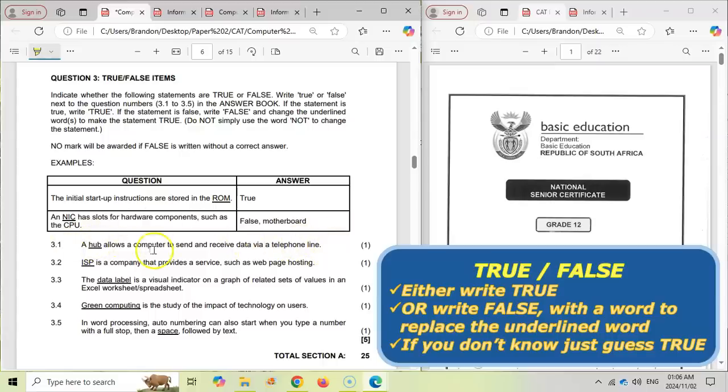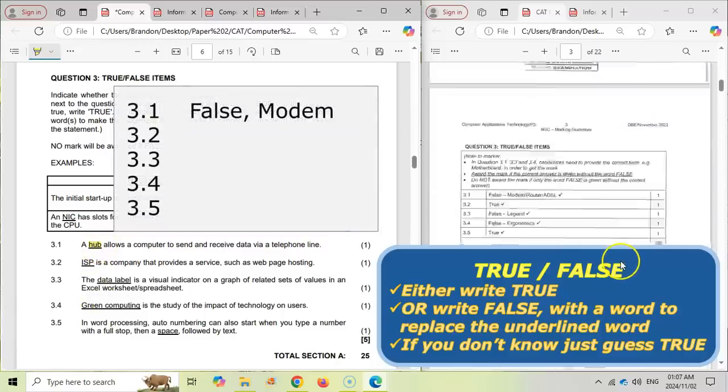But if we were doing this question and you say a hub allows computers to send and receive data via a telephone. Now we know that is false. That's not a hub. So you would say false. Now you need to take away that underlined word and you need to ask yourself what allows a computer to send and receive data via a telephone.